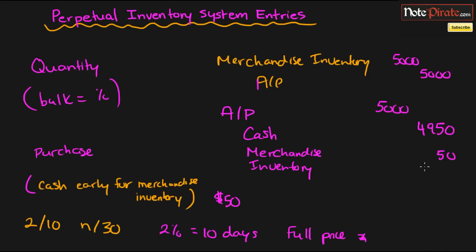And that's just to show that since we exchanged $4,950 worth of cash for the inventory, we're getting $4,950 worth of merchandise inventory. Which is why we credit and reduce the merchandise inventory on our books by $50.